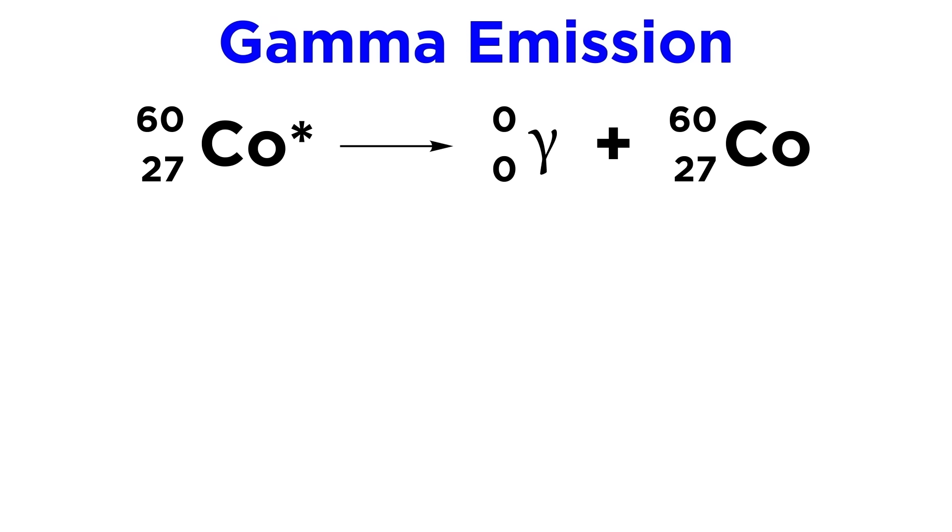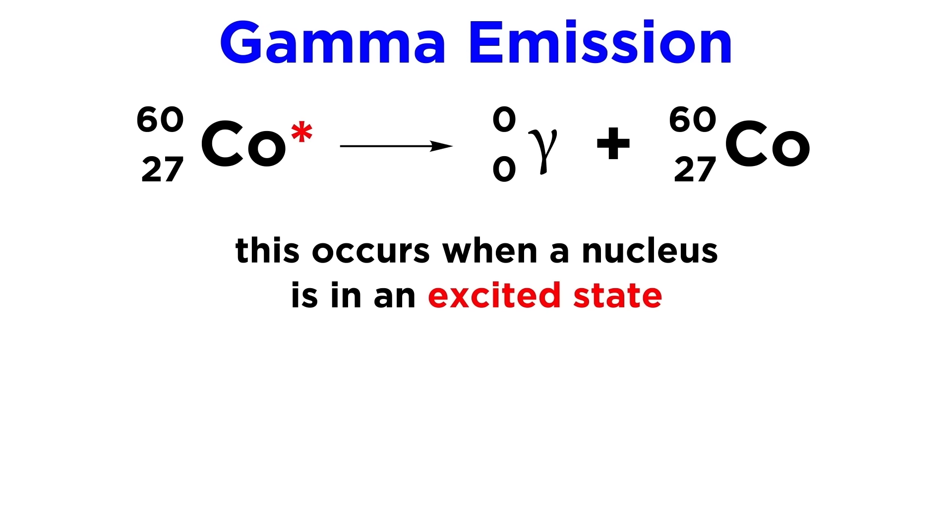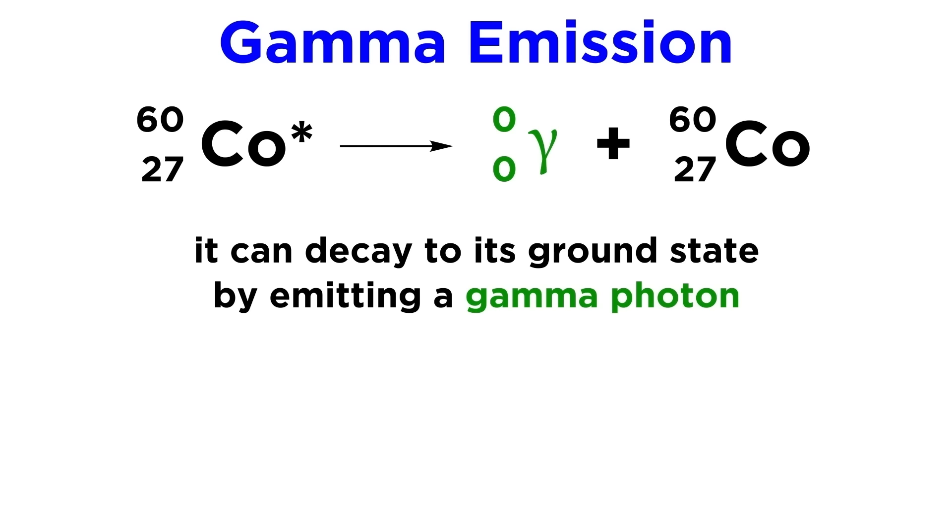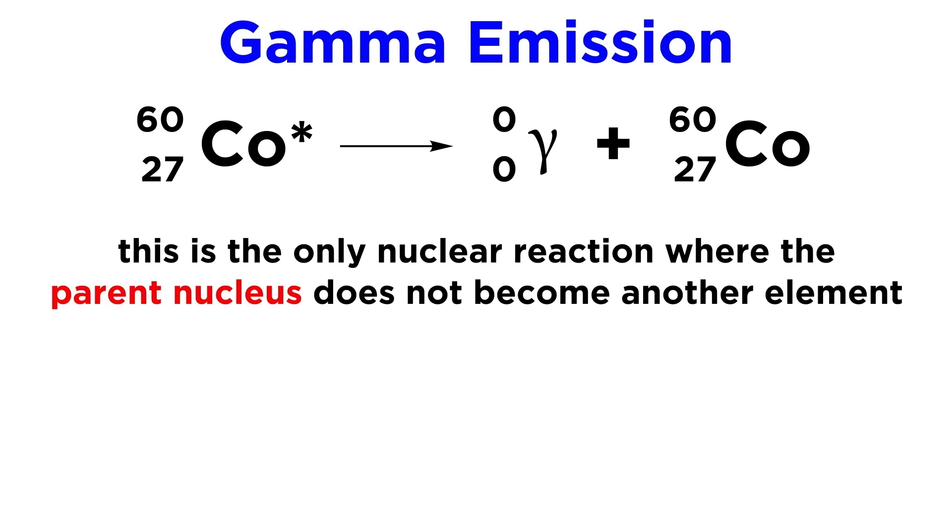Lastly, we have gamma emission. This will occur when a nucleus is in an excited state. It can decay to its ground state by emitting an extremely high energy gamma photon. Here the asterisk means excited, and we can see that the cobalt nucleus on the right side is in the ground state. This is the only kind of nuclear reaction in which the parent nucleus does not change from one element to another.